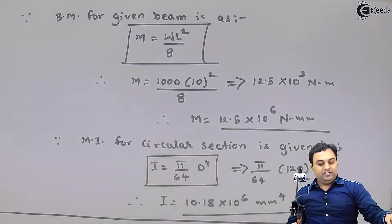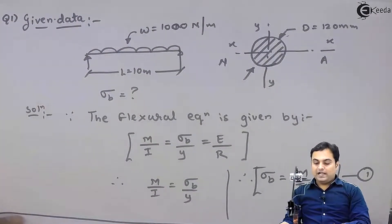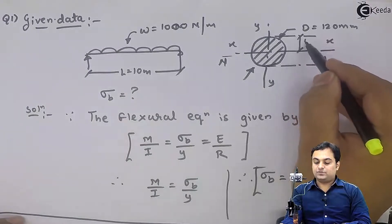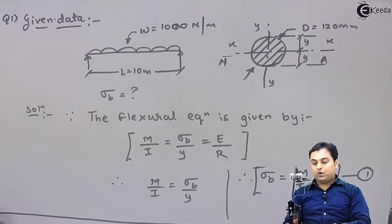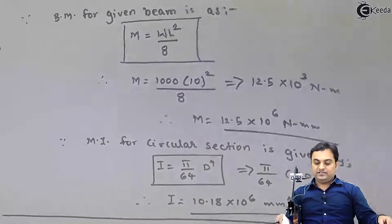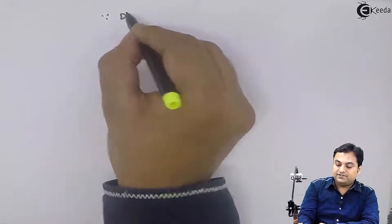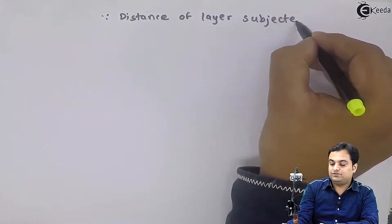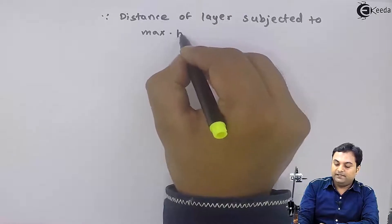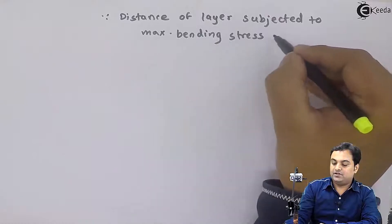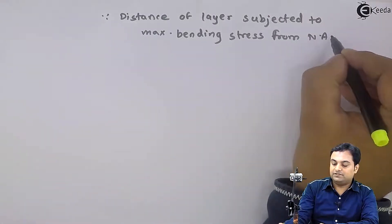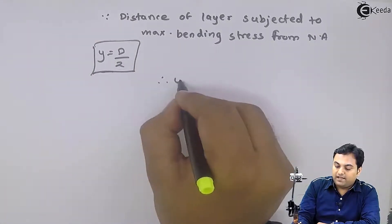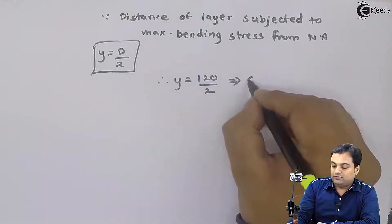Only Y is left now. Y is the distance from the neutral axis to the layer subjected to maximum bending stress — the maximum layer. For a circular section, Y = d/2. Therefore, Y = 120/2 = 60 mm.